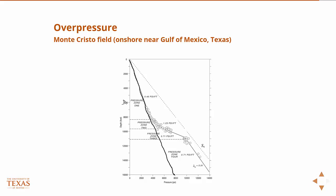Then you see a transition into an overpressure state. As we go deeper, the pressure increases such that the ratio reaches 0.91, approaching the lithostatic state. What's interesting is that the pressures at this depth have nearly doubled from the hydrostatic case — that's 14,000 PSI, whereas pure hydrostatic would be a little less than 8,000.